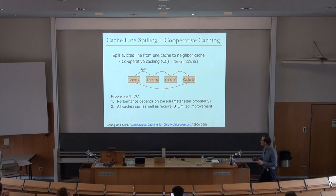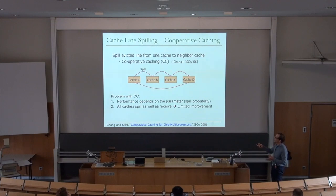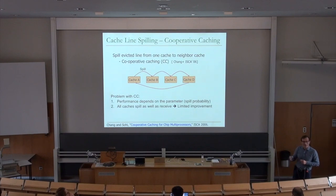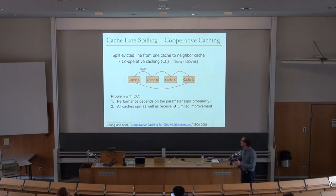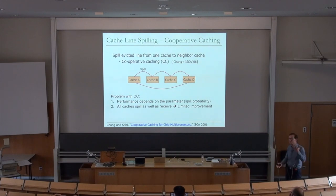If none of the cache blocks are useful, the coin causes you to put useless blocks into somebody else's cache. Also this work has all caches spill as well as receive, which may not be good. Some caches have cores utilizing cache extremely well and needing more; others have spare capacity. You don't want both to spill and receive simultaneously.